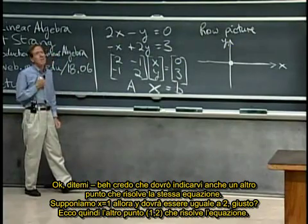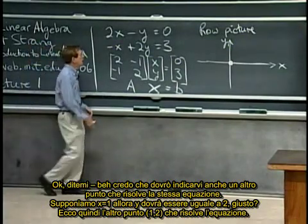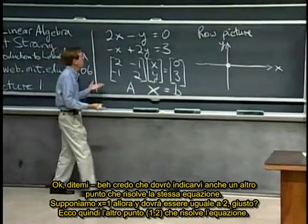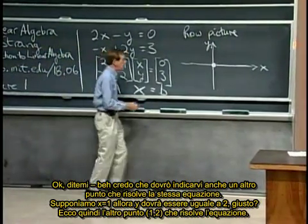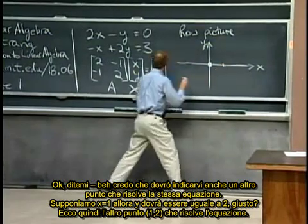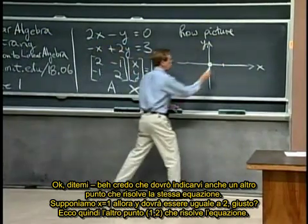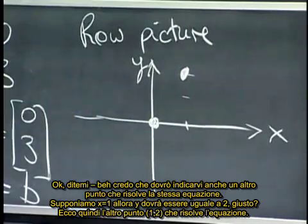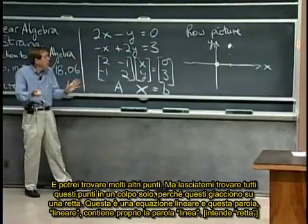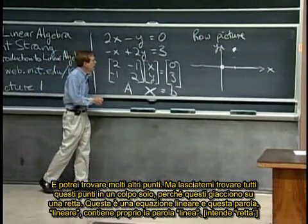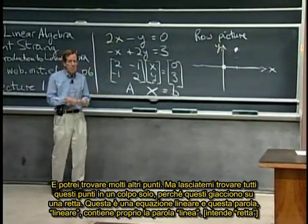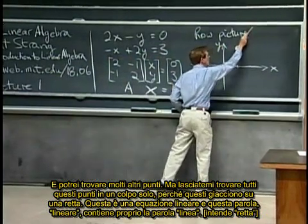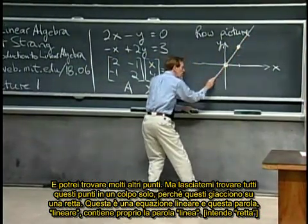Okay, tell me, well, I guess I have to tell you another point that solves this same equation. Let me suppose x is one, so I'll take x to be one, then y should be two, right? So there's the point that also solves this equation. Then I could put in more points. But let me put in all the points at once, because they all lie on a straight line.